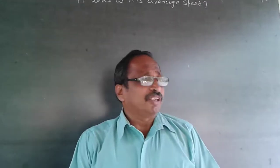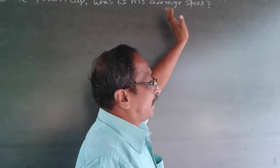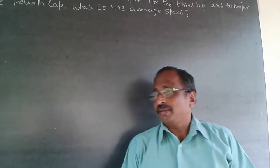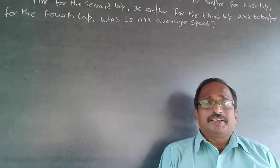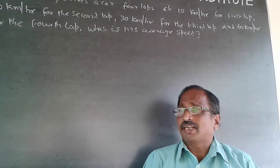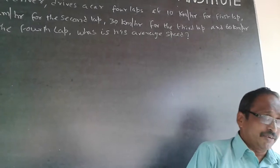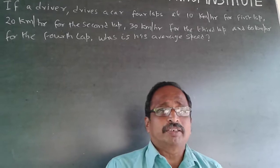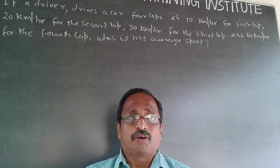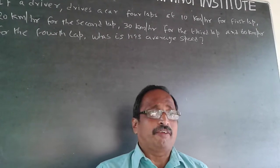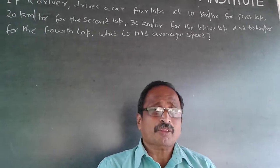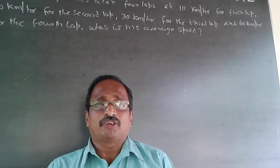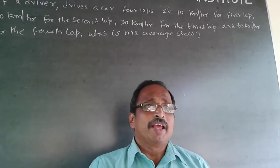Some students give the answer as (10 + 20 + 30 + 60) ÷ 4 = 30, but that is wrong — it is the average of the 4 numbers, not the average velocity. Average velocity is always total distance travelled divided by total time taken.